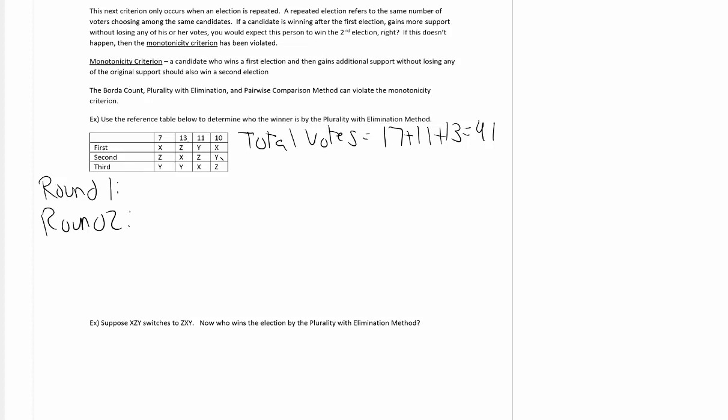Let's go with the first round. X has 7 plus 10, that's 17 first place votes. Y has 11, and Z has 13. So X has the most first place votes, that's 17 divided by 41. That's approximately 0.41, and we know 0.41 is less than 0.5. That's not a majority. So we eliminate the candidate with the least number of first place votes. In this case we will eliminate Y.